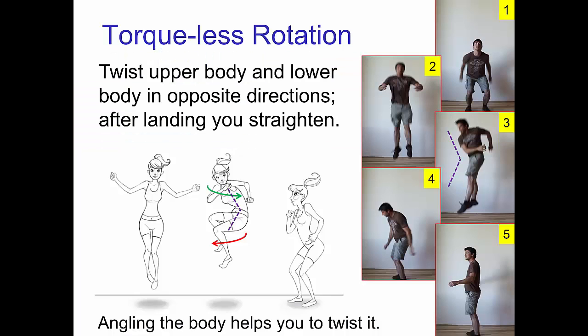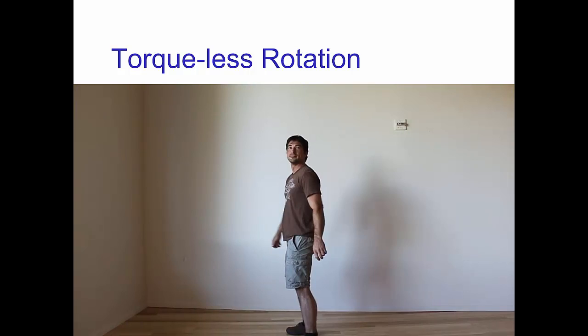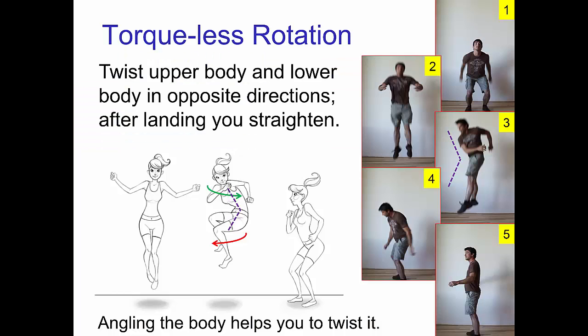The trick to performing this torqueless rotation is to rotate the upper and lower body in the opposite direction. That is, to turn your lower body so your feet are pointing towards screen left, you swing your arms towards screen right. This is easier to do if you also angle the body as shown. Essentially the lower body is pushing off of the upper body.